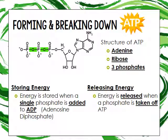The structure of ATP consists of adenine, which is a nitrogenous base; ribose, which is a sugar; and three phosphates. When we want to store energy, we take a single phosphate and add it to ADP — adenosine diphosphate, which has two phosphates. If we want to release energy, we take one phosphate off of ATP, and that causes energy to be released.